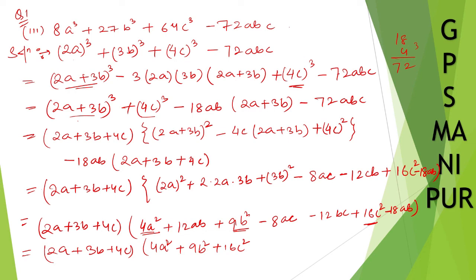Now, minus 6. 12ab and 18ab, 12ab plus 12ab minus 18ab, it will be minus 6ab minus 8ac minus 8ac minus 12.